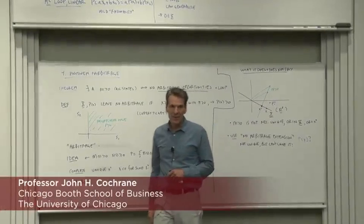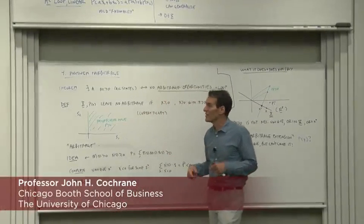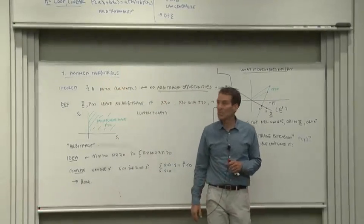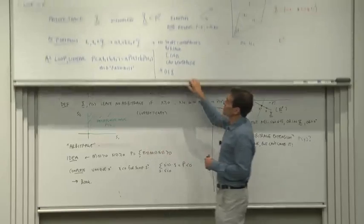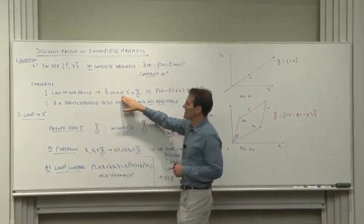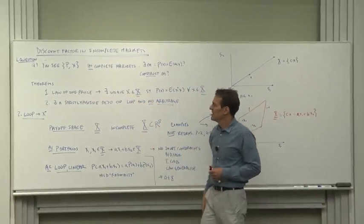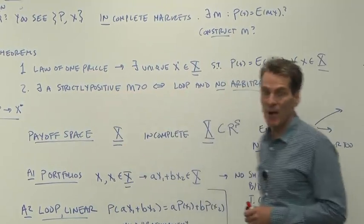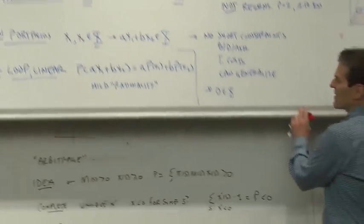Now to our second theorem about discount factors when markets are incomplete, positive discount factors, and the absence of arbitrage. There are two theorems we're chasing. The first one is that the law of one price implies a unique discount factor in the payoff space. Our second theorem is that no arbitrage implies a strictly positive discount factor. Let's go see what that means and how it works.